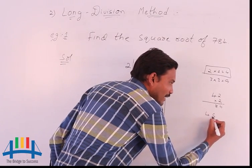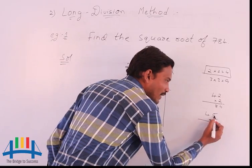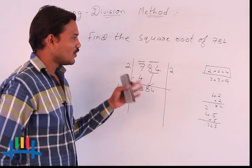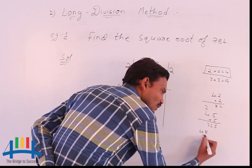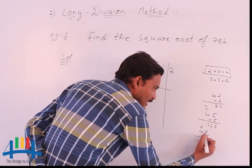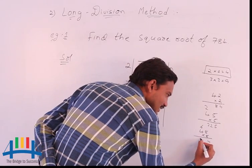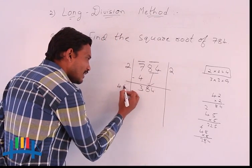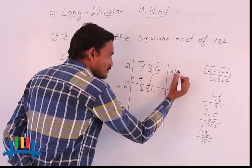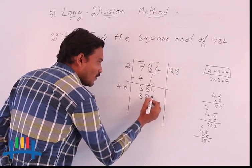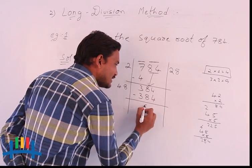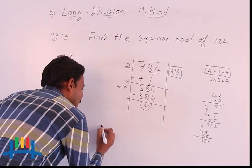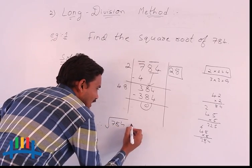So I will try another number. Considering 48: 8 times 8 is 64, 8 times 4 is 32, and 32 plus 6 is 38, giving 48 times 8 is 384. So annexing 8 to 4 gives 48, and 48 times 8 is 384. After subtracting, the remainder is 0. The quotient obtained is the square root of the given number. Therefore, the square root of 784 is 28.